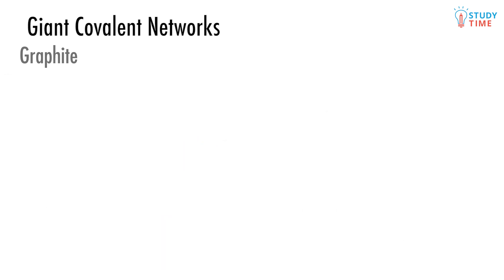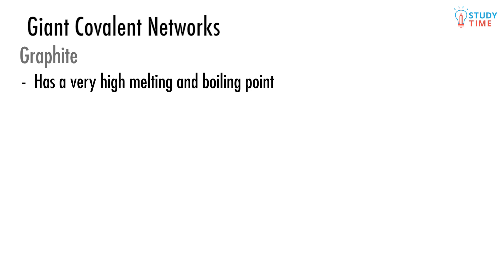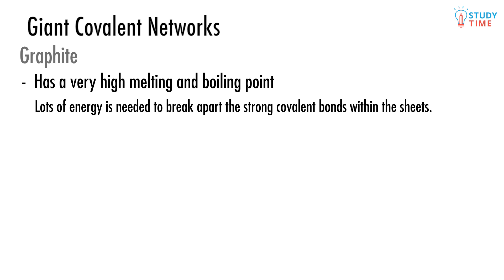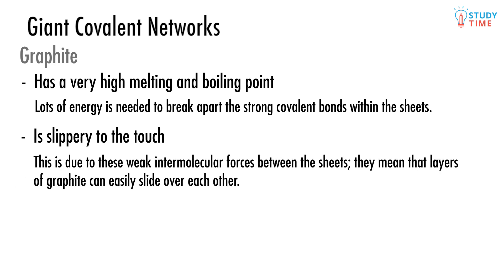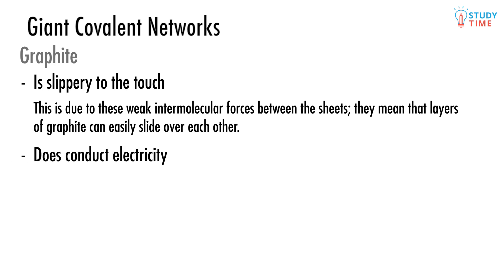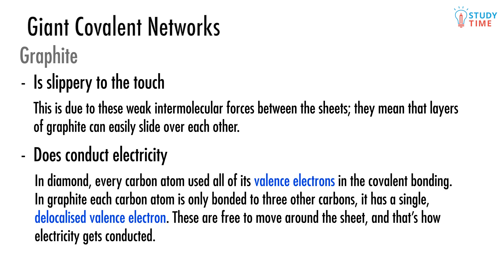Graphite has a very high melting and boiling point — lots of energy is needed to break apart the strong covalent bonds within the sheets. Graphite is slippery to the touch, which is also why graphite can be used to write or draw with. This is due to the weak intermolecular forces between the sheets, meaning that layers of graphite can easily slide over each other and onto your paper. Graphite does conduct electricity. Because each carbon atom is only bonded to three other carbons, it has a single delocalized valence electron. These are free to move around the sheet, and that's how electricity gets conducted.